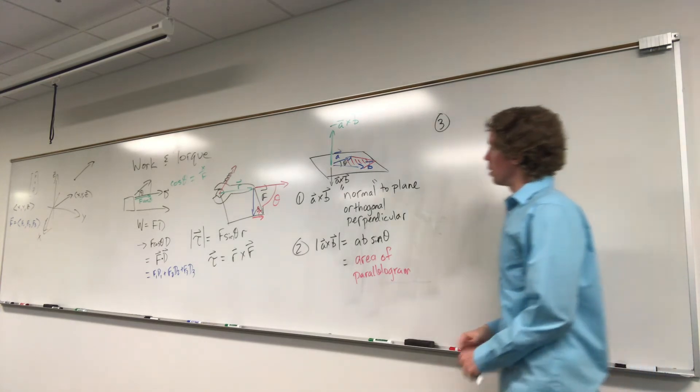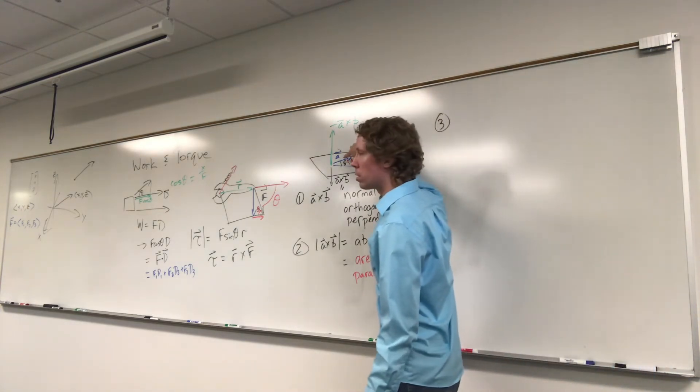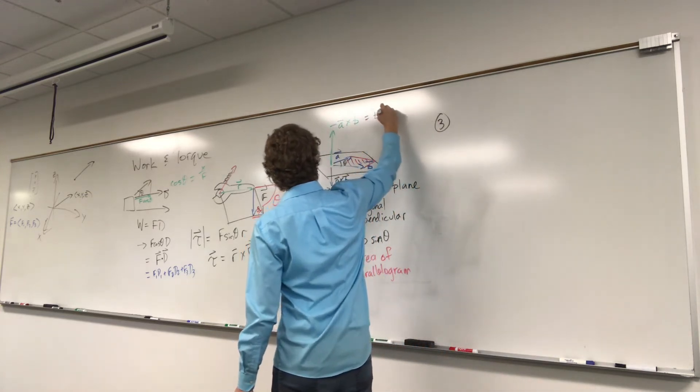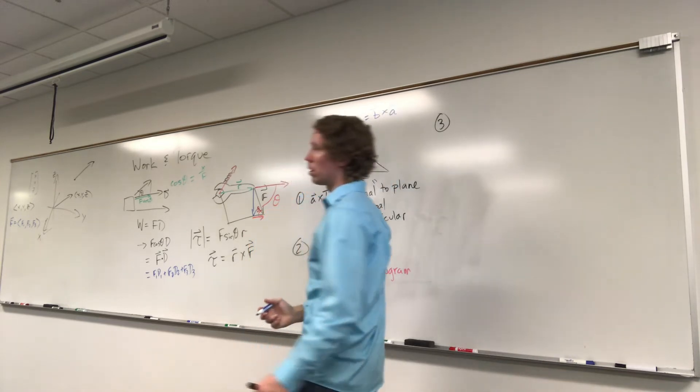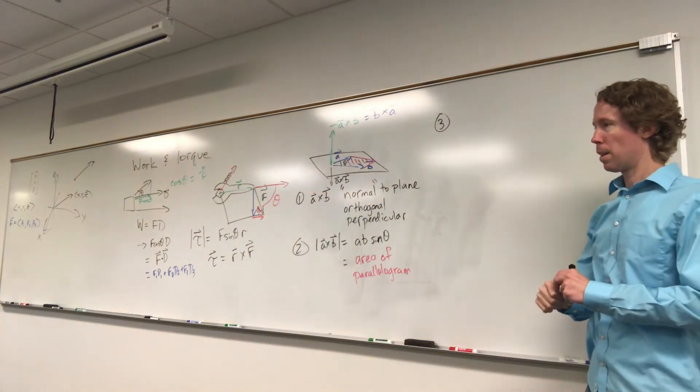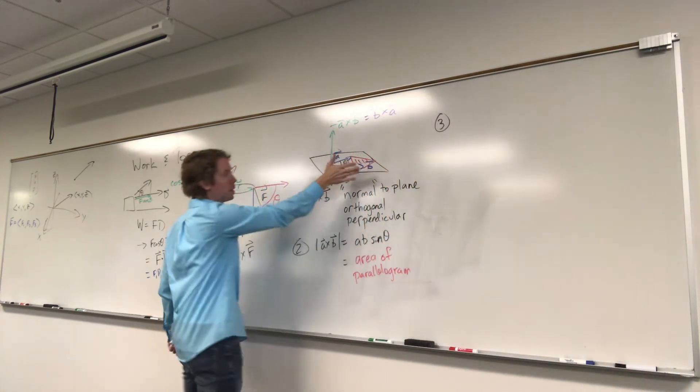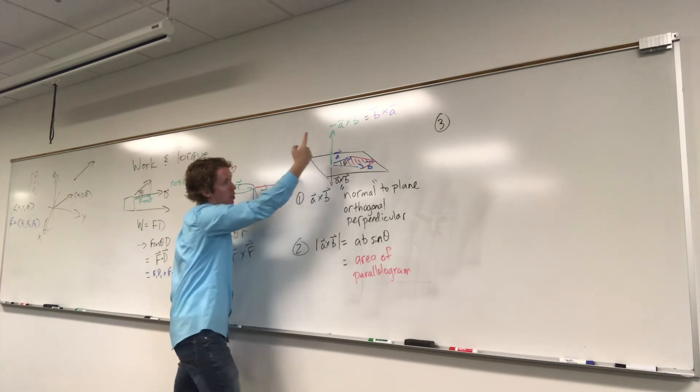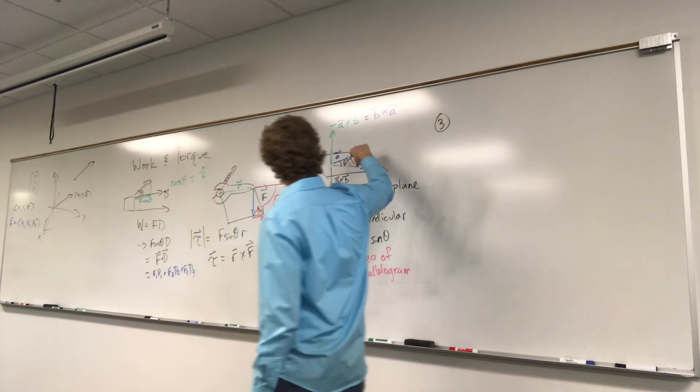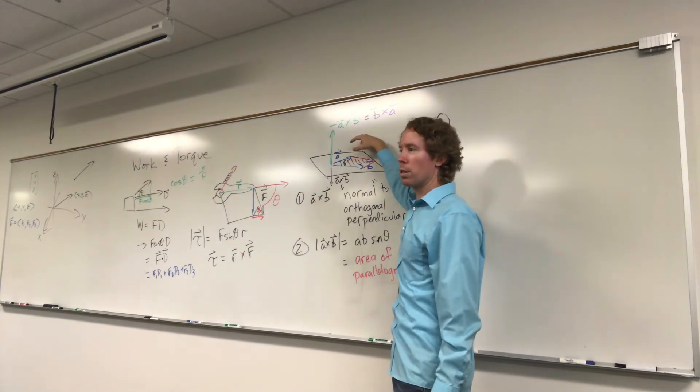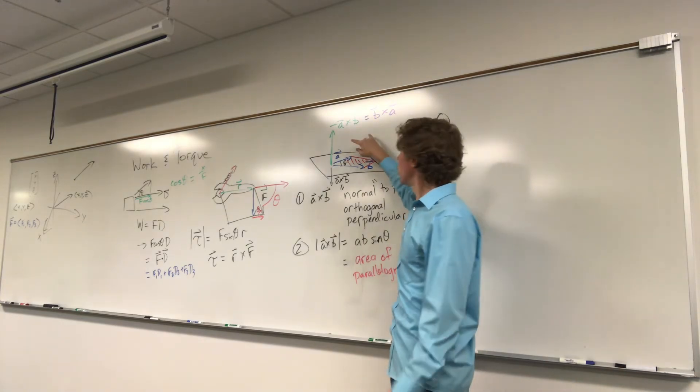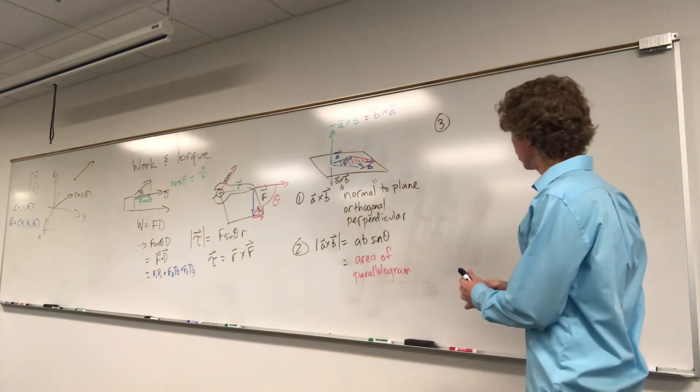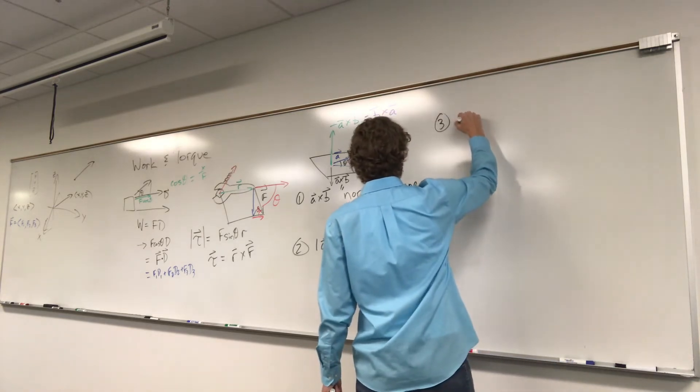And then, you know, if we switched, if we did B cross A, then we would get this one. Because if I take my right hand and I wrap from B to A, my thumb points up. It points in that direction. And the area of the parallelogram is the magnitude of that vector. It's still the same parallelogram, so it's still the same area. So we know that these two vectors are exactly equal. So I'm just going to say right-hand rule here.